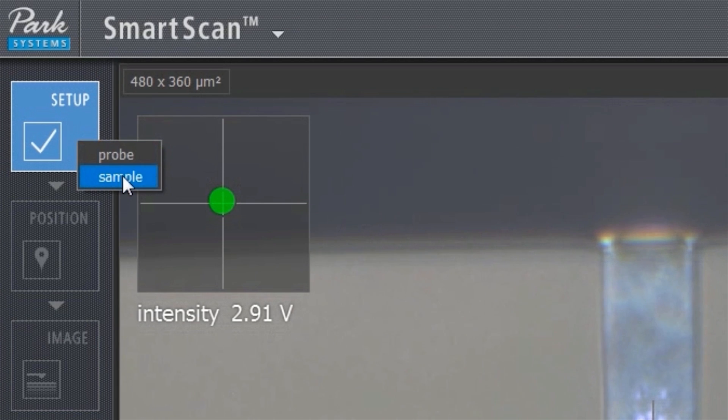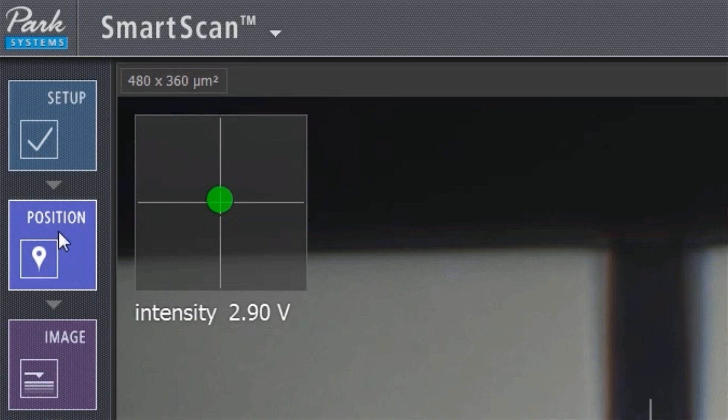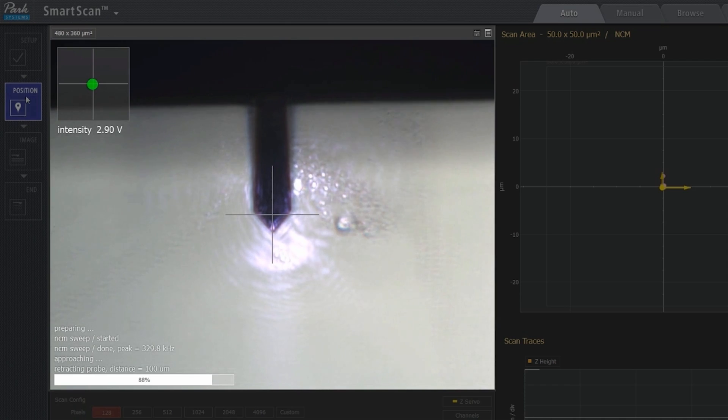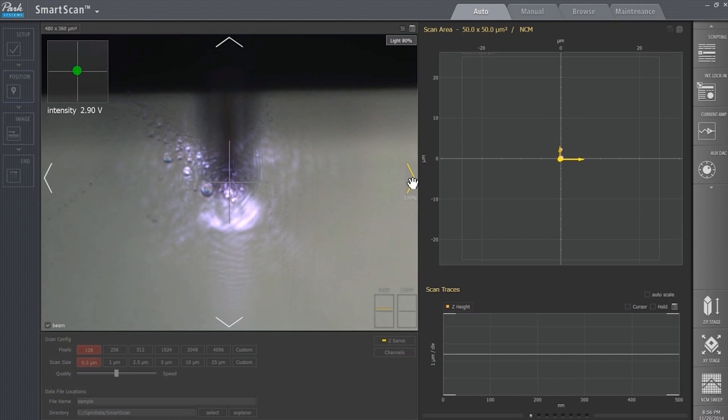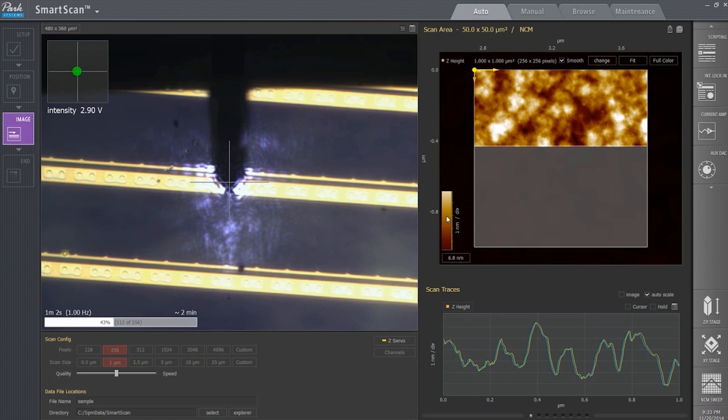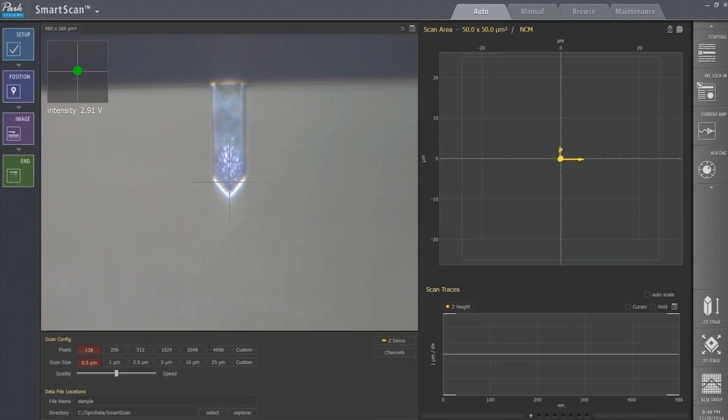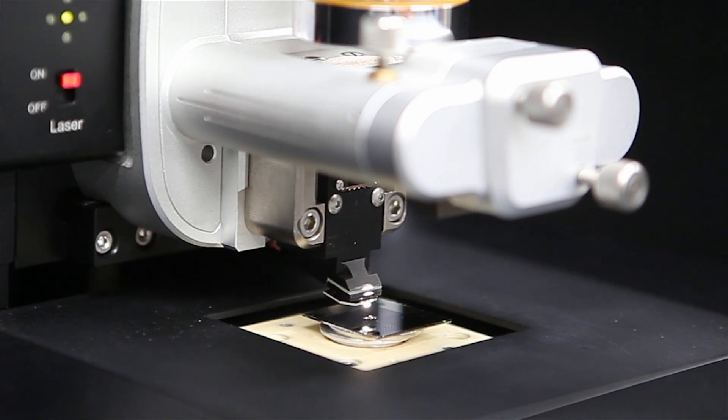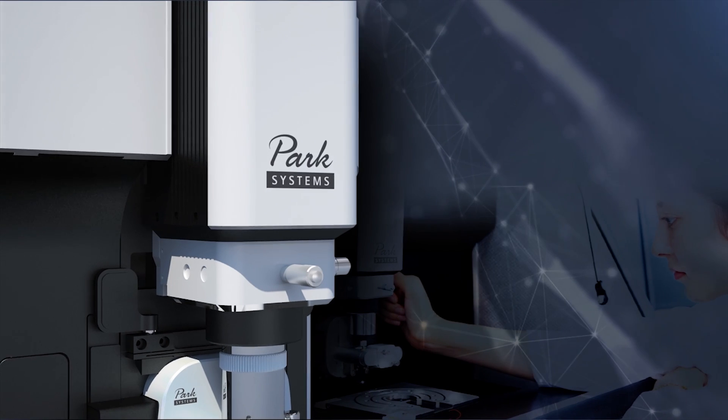Park Systems builds upon this superb hardware technology with the dedicated operation software Park Smart Scan, making it possible for anyone to obtain optimal AFM images by using the software's auto mode without the need for an experienced operator. A few simple clicks and Park Smart Scan automatically calculates optimum values, making AFM image measurements simple and easy.